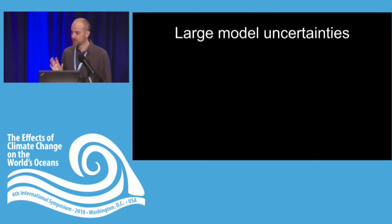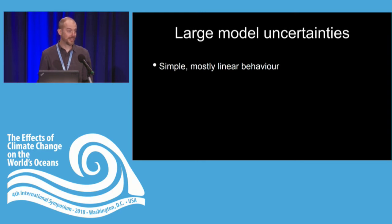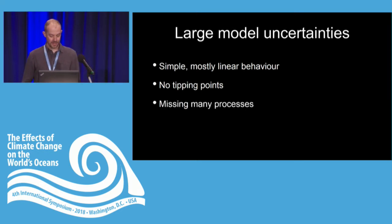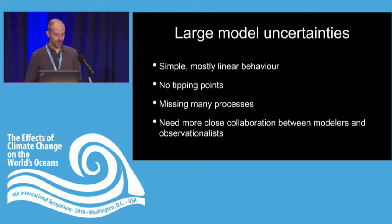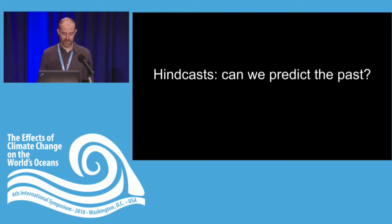These models tend to have simple and pretty linear behavior — we always construct models to be stable. We're not aware at this point of any tipping points put into these models, so real tipping points in the ecosystems are not represented. They're missing many processes, and we really need much more close collaboration between modelers and observationalists in order to improve these models.